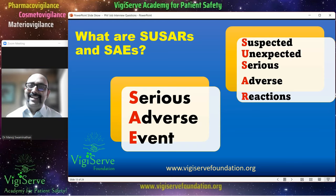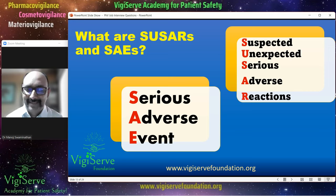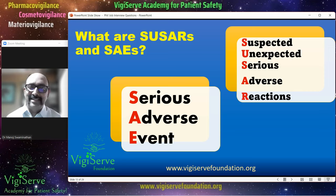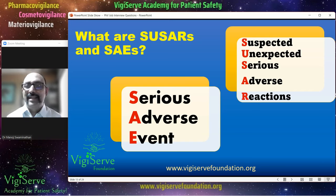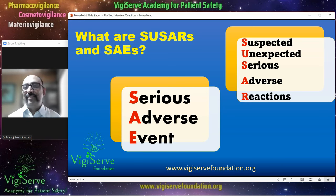Another common question is: what are SUSARs and SAEs? SAEs are serious adverse events, and SUSARs are suspected unexpected serious adverse reactions. The same concept from the adverse event versus adverse drug reaction question applies here — all SAEs are adverse events and all SUSARs are adverse drug reactions, meaning there is a causal relationship in case of SUSARs, while there may or may not be a causal relationship in a serious adverse event. Also, all SUSARs may be serious adverse events. If the interview is for a job involving clinical trial safety report processing, you are bound to receive such a question.